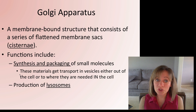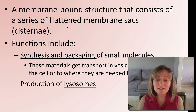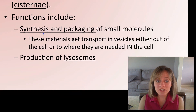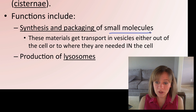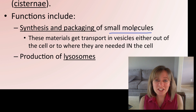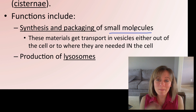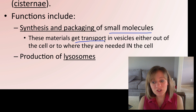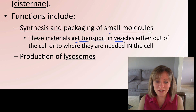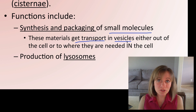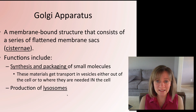Next is the Golgi apparatus — a membrane-bound structure of phospholipids consisting of a series of flattened sacs called cisternae. Two main functions: synthesis and packaging of small molecules. From one side of the Golgi, it takes in small molecules, modifies and packages them, then transports them in vesicles to where they need to go — either inside the cell or outside. The Golgi apparatus also makes lysosomes, which we'll discuss in a moment.